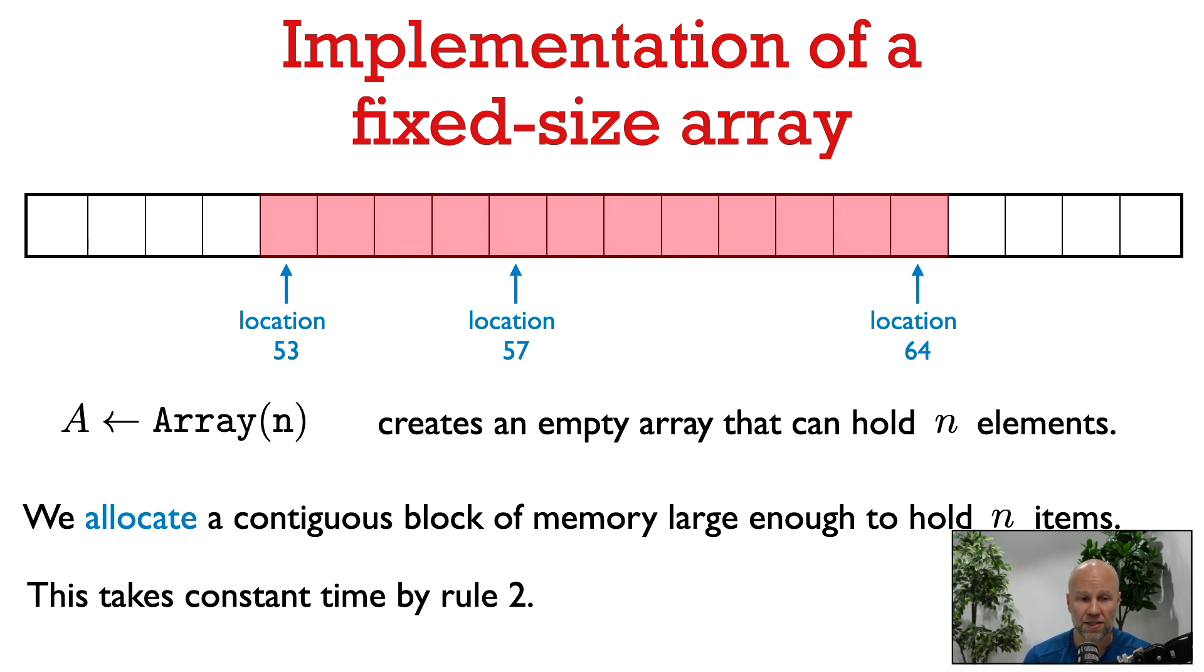Here's our implementation of a fixed-size array. To simplify things, we assume that the items that we are storing in the array fit inside a single word. I'm sure you will see how to modify things if each element takes, instead, say, four words of memory. For the example, it just makes it simpler if each item of the array just takes a single word of memory.